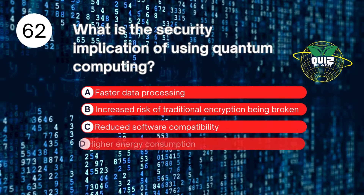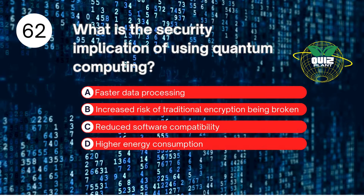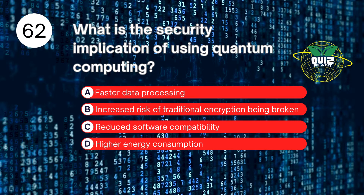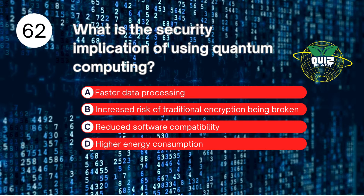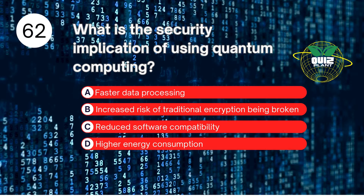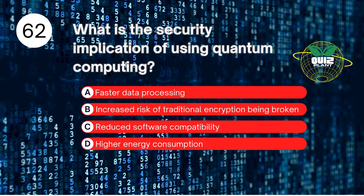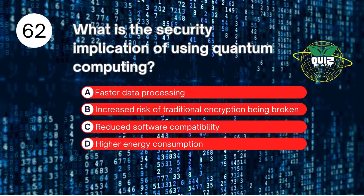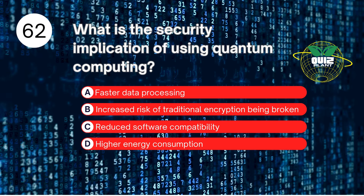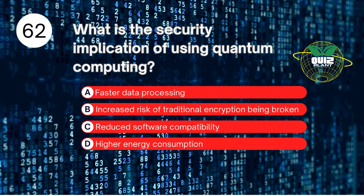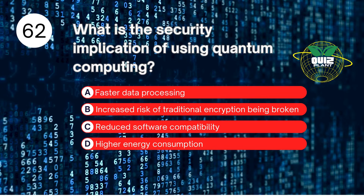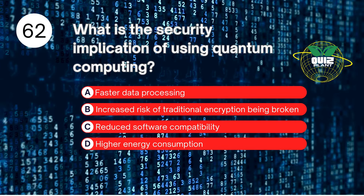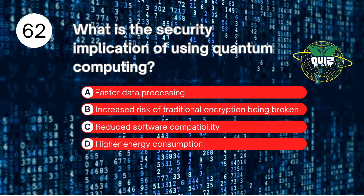Number 62. What is the security implication of using quantum computing? A. Faster data processing. B. Increased risk of traditional encryption being broken. C. Reduced software compatibility. D. Higher energy consumption. The answer is B. Increased risk of traditional encryption being broken.